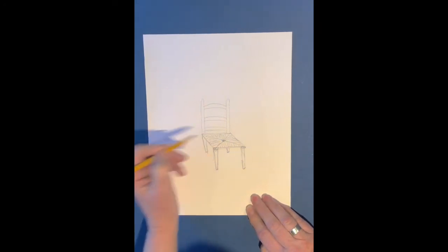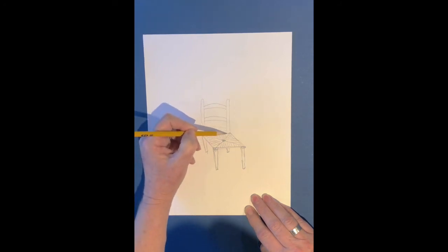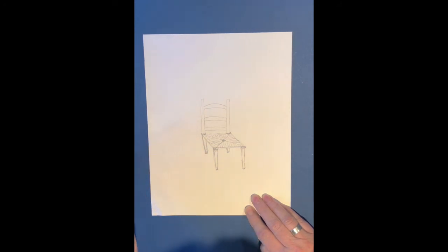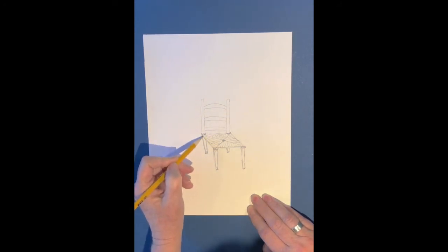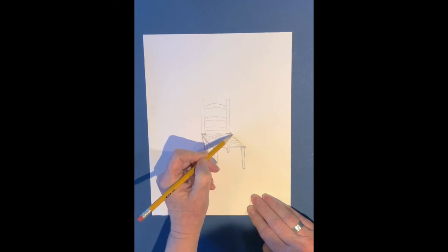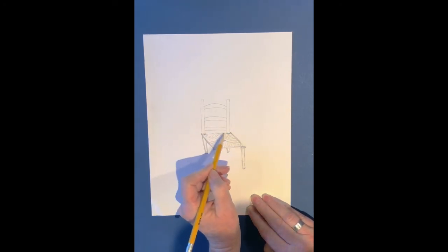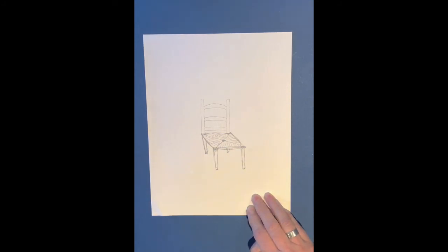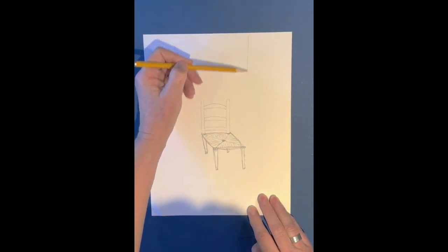Okay. Make sure that those little curves there in the back where the seat meets the back of the chair. All right. And now we can kind of soften the edges around the seat because it's kind of roundish. So there you have your chair.